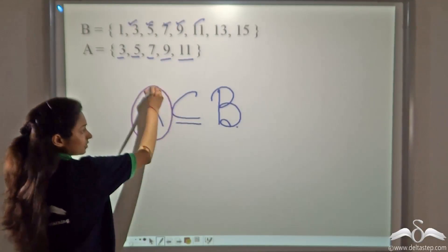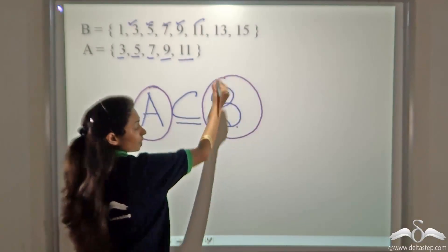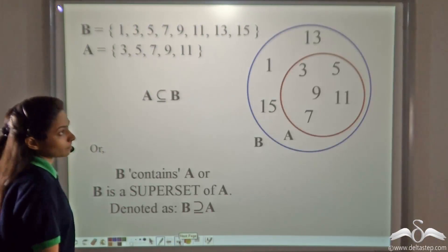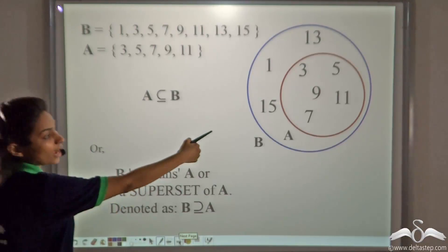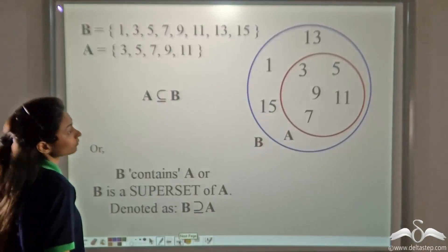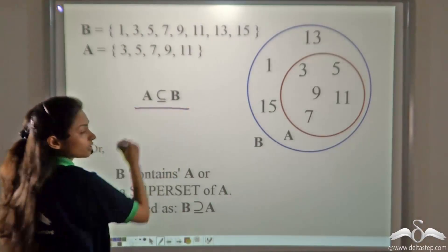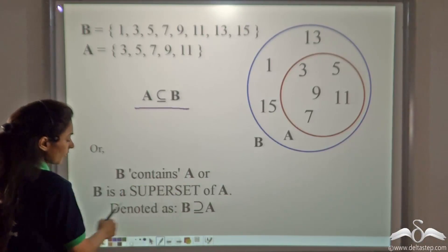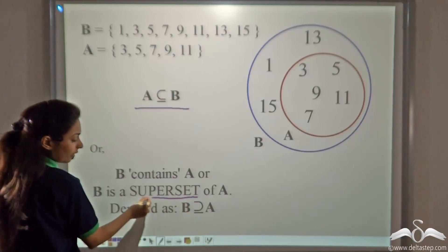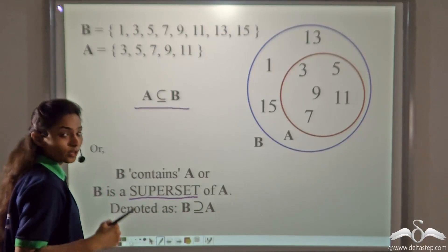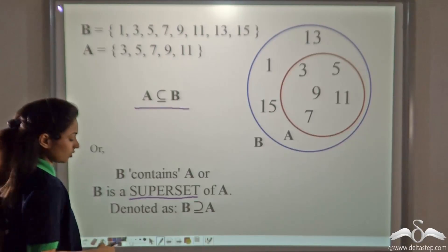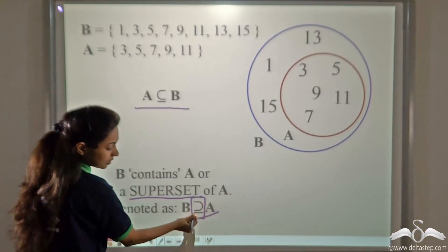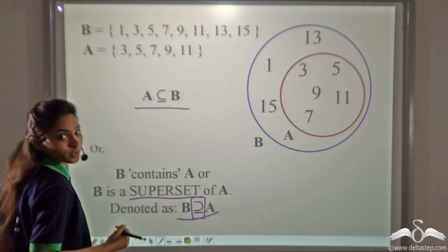Here B is the main set or superset. Looking at the Venn diagram, you can see every element of A inside B, confirming A is the subset of B. We can also say that B contains A, or B is a superset of A. It is denoted as B is the superset of A — just reverse the subset sign and it gives you the symbol for superset.